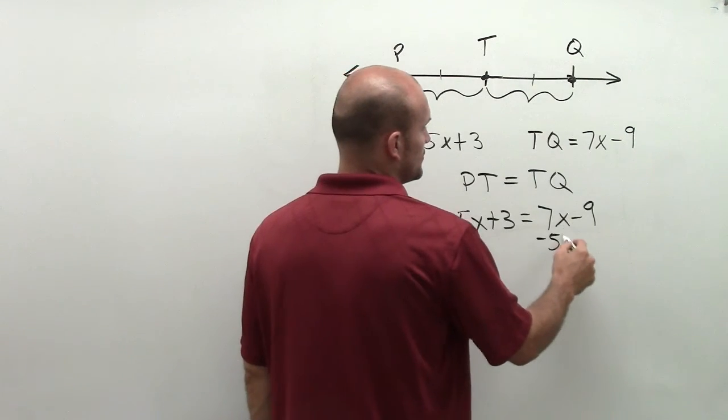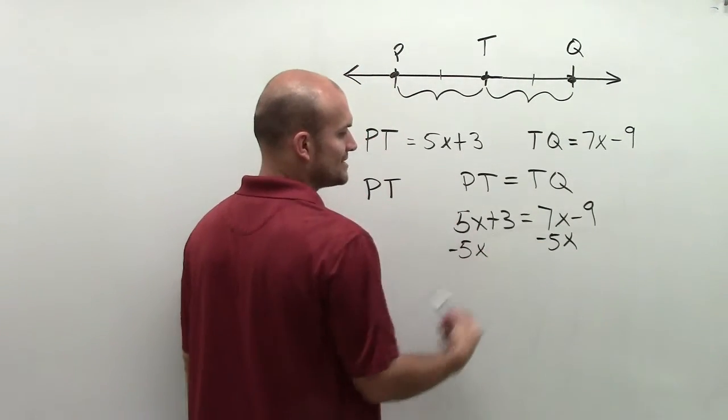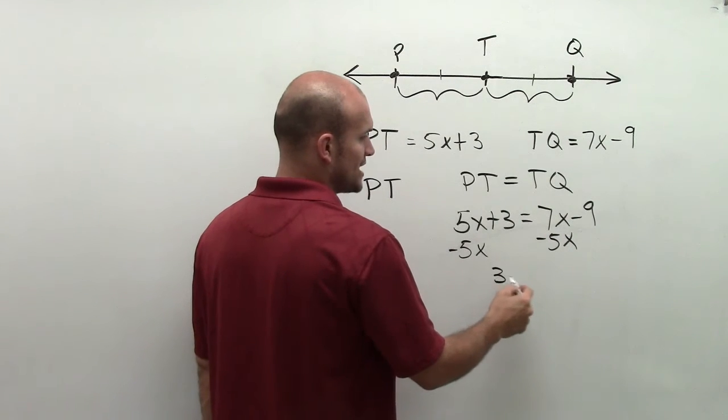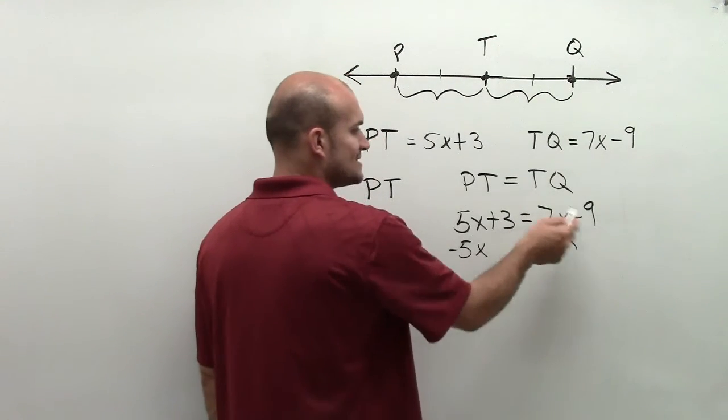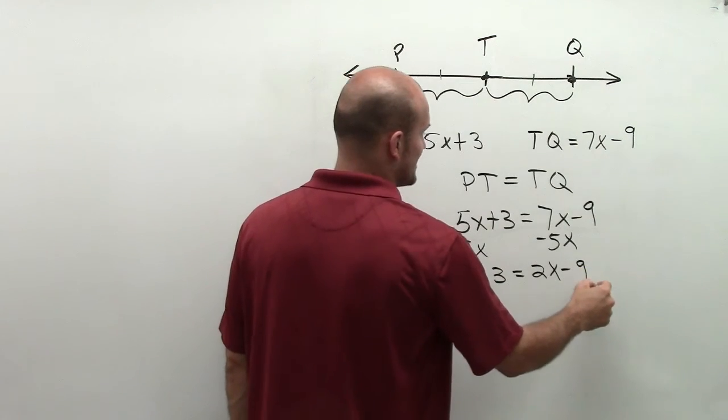So I'm going to get my variables on the right side. So I'll subtract the 5x on both sides using subtraction property of equality, and 7x minus 5x is 2x minus 9.